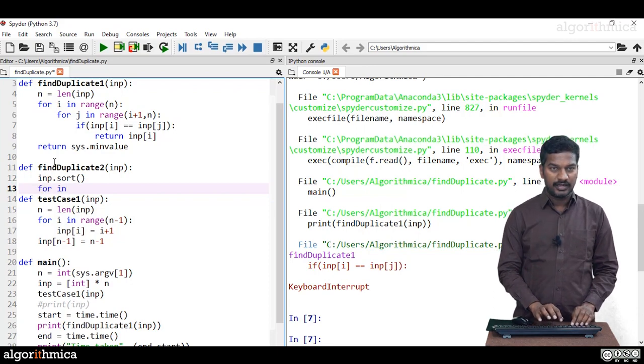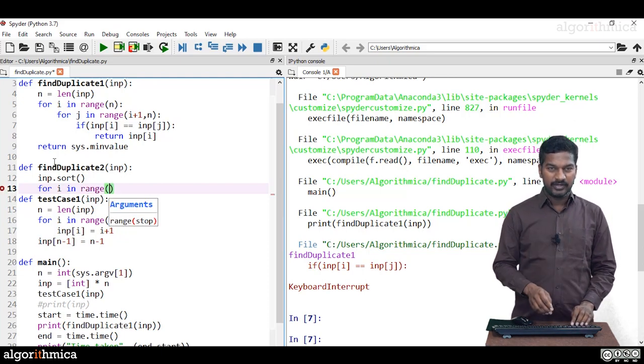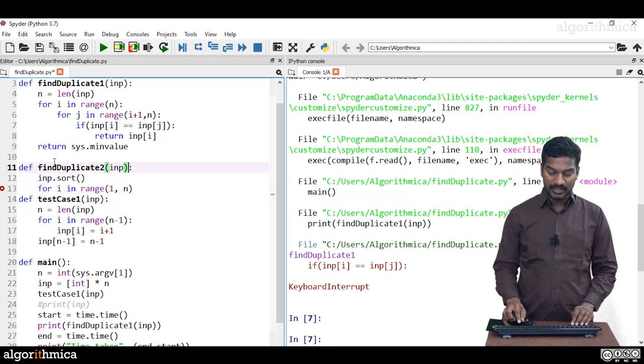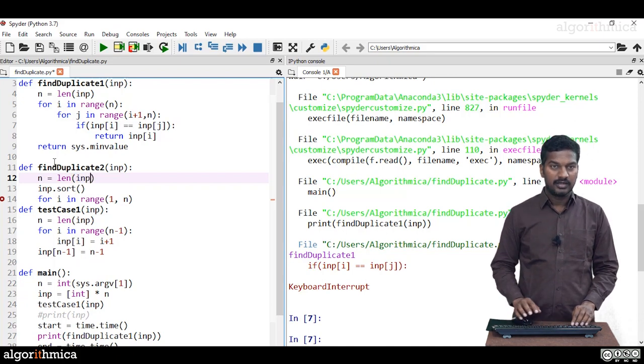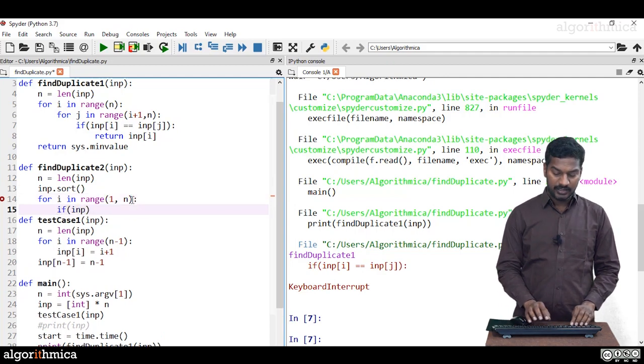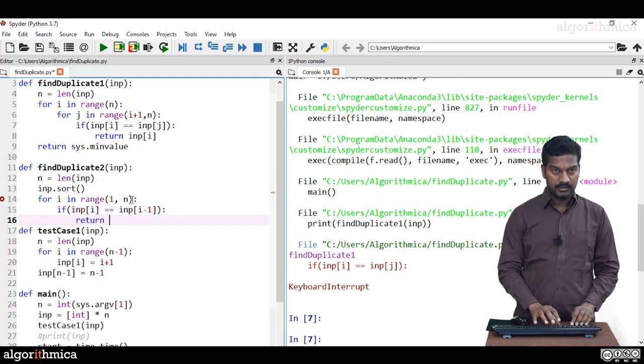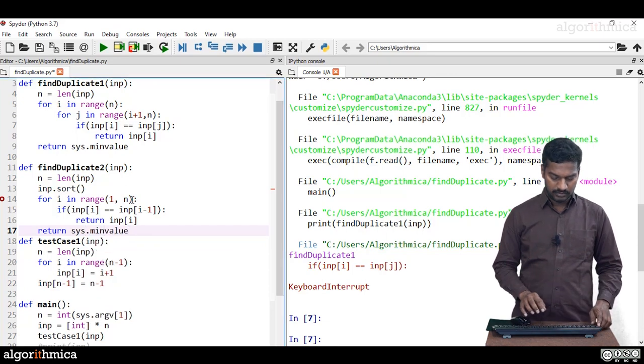Step one is to sort the list. I call it sort, which will sort this one. Then one scan is enough. For i in range one to n - I'll initialize n equal to len of inp. Now let's go from one to n. What I'm doing here: if inp[i] is equal to inp[i-1], we got a duplicate. Return inp[i]. At the end, if nowhere is this available, return a special value like negative one. That's what we call solution number two: first sort followed by one scan.